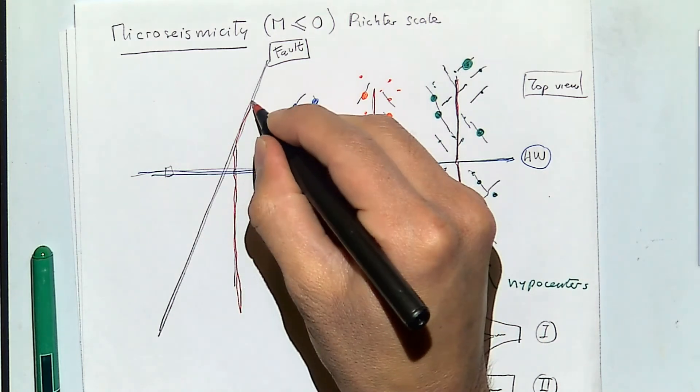The problem with uncemented or unconsolidated media is that you have no tensile strength — tensile strength equals zero — and no fracture toughness. Because there is no toughness, linear elastic fracture mechanics cannot be applied, since LEFM assumes you can sustain tension at the fracture tip, which is not the case here.